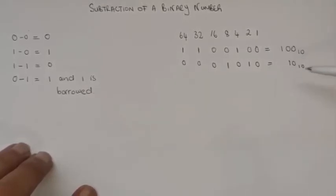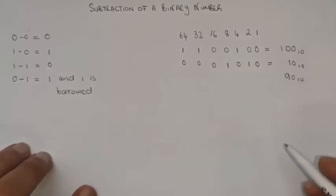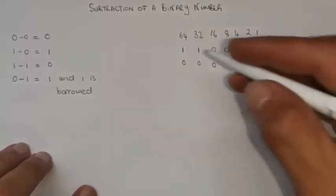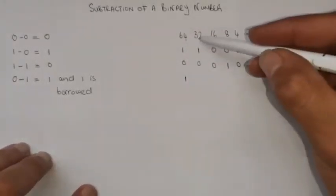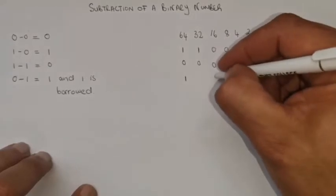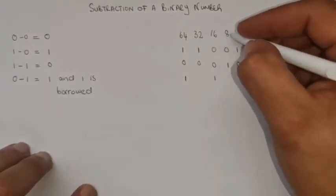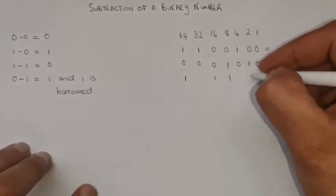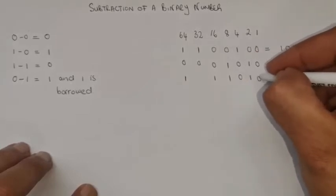100 minus 10 equals 90 in base 10. To represent 90 in binary: I use 64, skip 32 (that would exceed 90), then add 16 to get 80, plus 8 to get 88, plus 2 to get 90. The remaining positions are zeros.